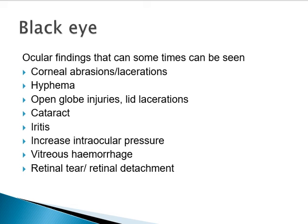Patients can have scratches on the cornea — corneal abrasion — or corneal lacerations due to blunt or penetrating trauma. Hyphaema, which is blood collection in the anterior chamber, can happen with blunt trauma. Patients can have open globe injuries or lid lacerations, and can develop traumatic cataract post penetrating or blunt ocular trauma. Post-injury, some patients can develop inflammation within the eye leading to iritis.